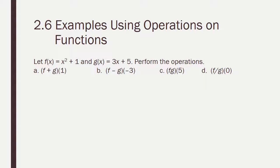So let's try this out. Let f of x equal x squared plus 1, g of x equal 3x plus 5. We're going to perform these operations, and what you're going to do is you're going to put in the number that they give you for x in f and in g, and then do whatever it tells you to do, whether it's add them, subtract them, multiply, or divide. Pause the recording, see if you can do this, and resume the recording to check your answer.